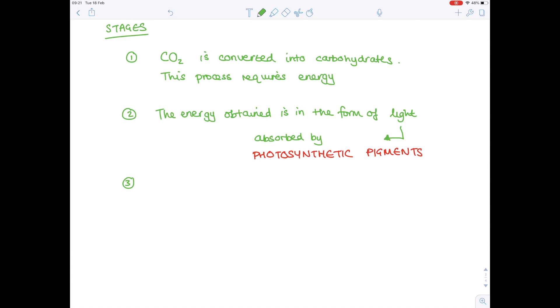And then the last thing to point out is that electrons are actually needed in order to convert that carbon dioxide into the carbohydrates. Where do we get these from? Well, it's a process known as photolysis.